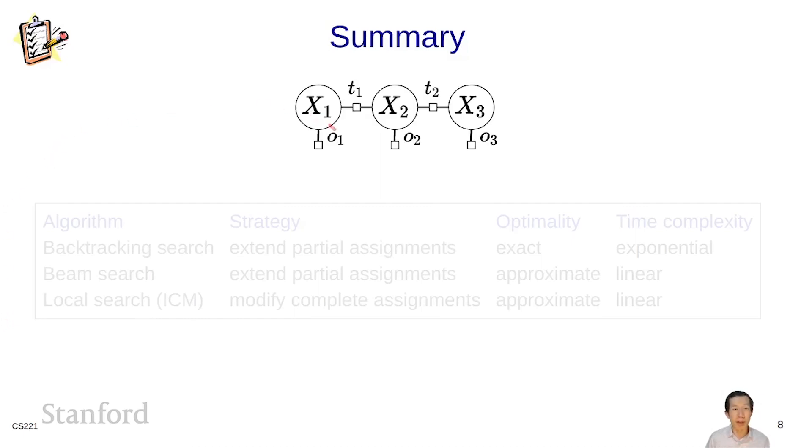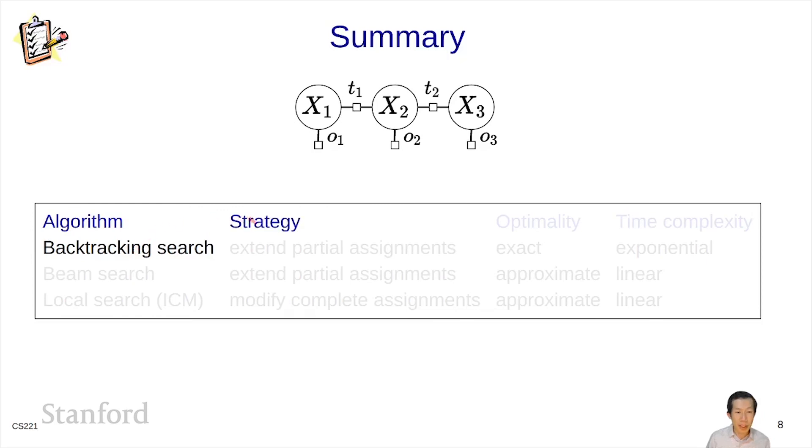Here is the summary. Let me summarize all the search algorithms for CSPs that we've encountered. First, we looked at backtracking search. The strategy is to extend partial assignments and then backtrack when we get to the complete assignment. Backtracking search is exact. It computes the actual maximum weight assignment. It's the only algorithm that we're considering that does that in general. But the main problem is that the time can be exponential in the number of variables.